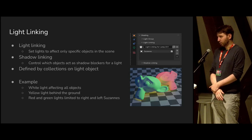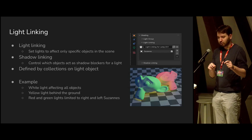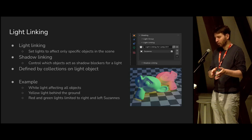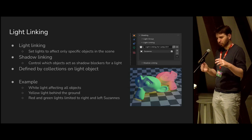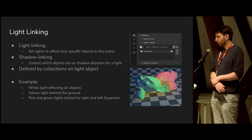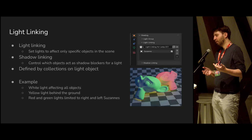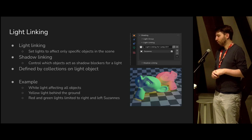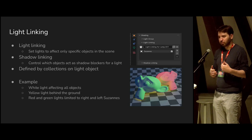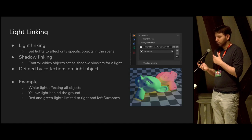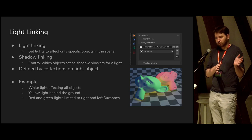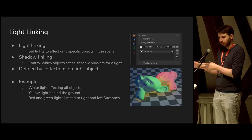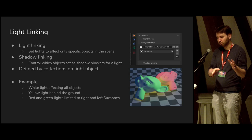The user interface lets you set a collection on a light containing an arbitrary number of objects or collections — that defines which objects the light affects. Or alternatively, you can just exclude specific objects. There was lots of discussion about how light linking should work. We went with this approach for two main reasons: it's the industry standard, compatible with USD export and other renderers. The other reason is it's more convenient to customize lights when setting up a shot, rather than adding overrides to objects in the scene.